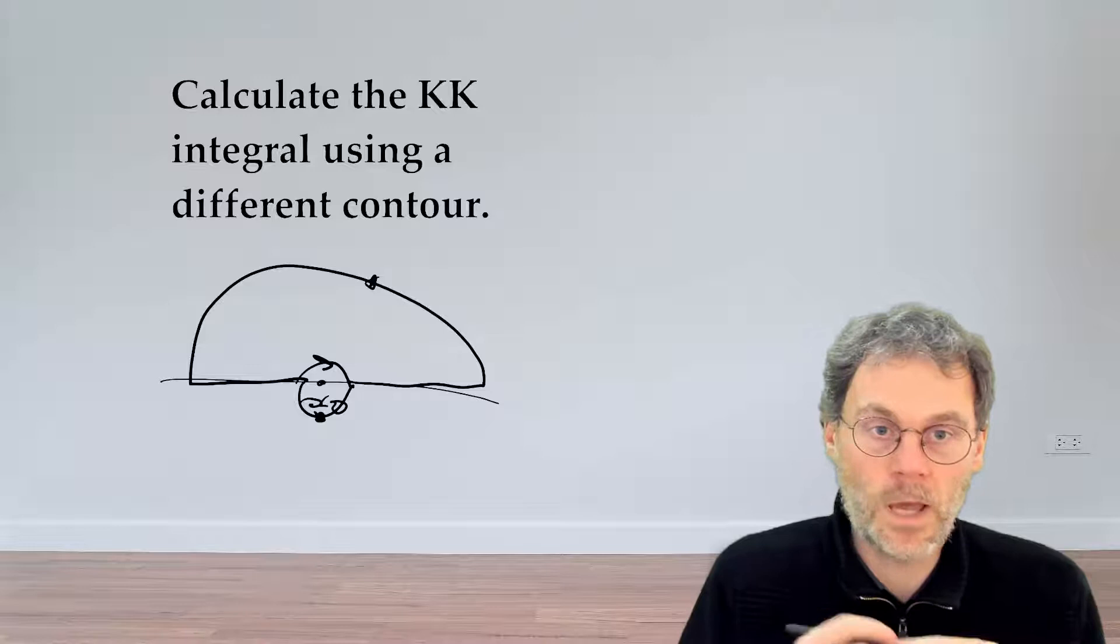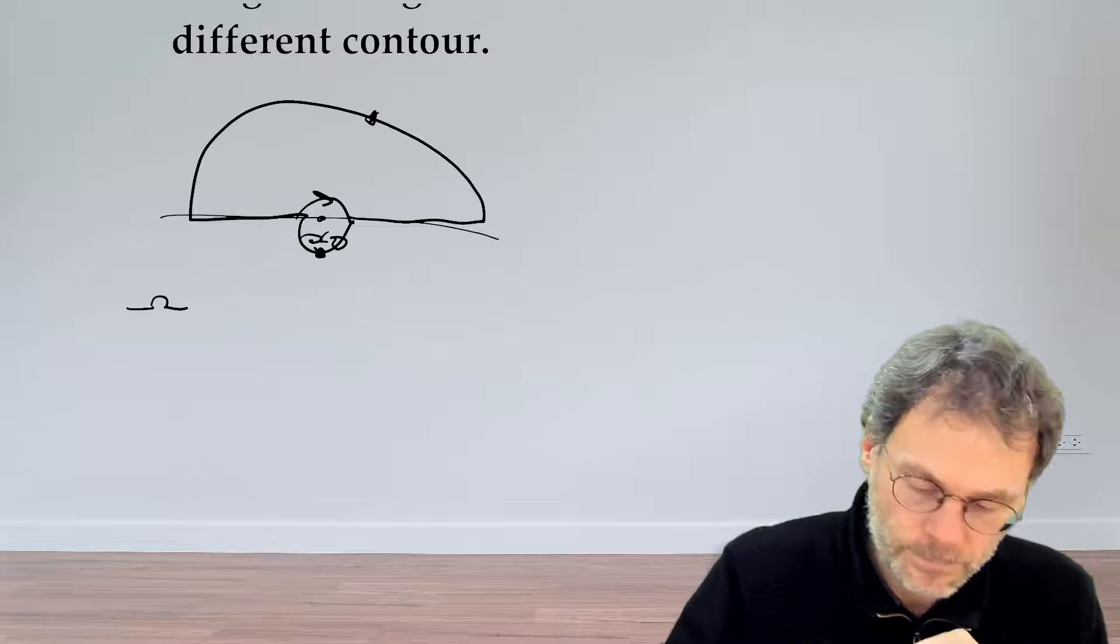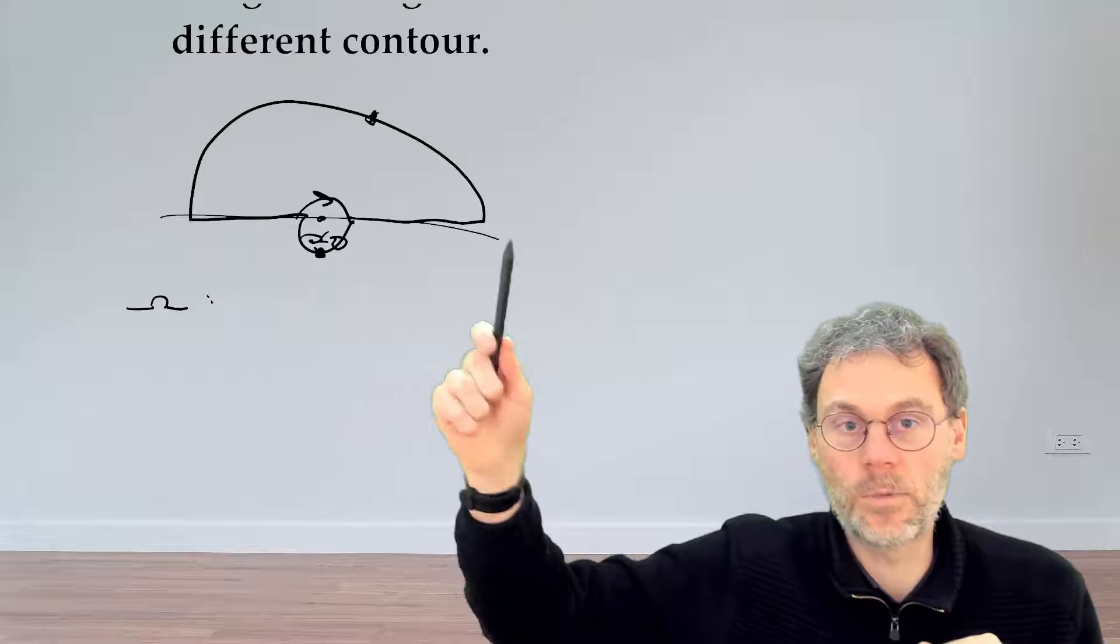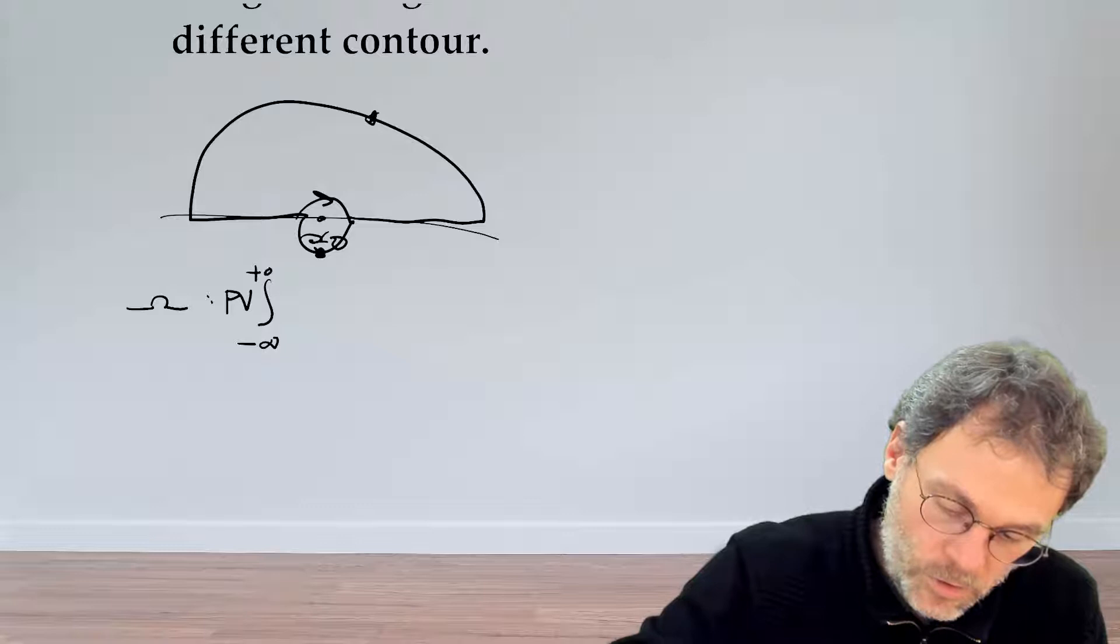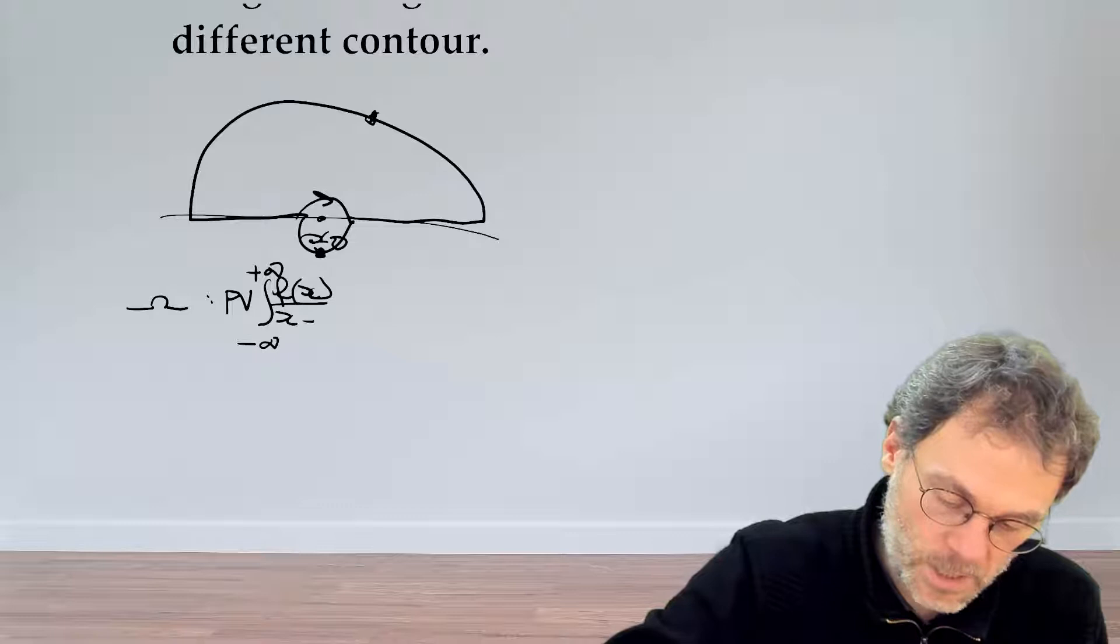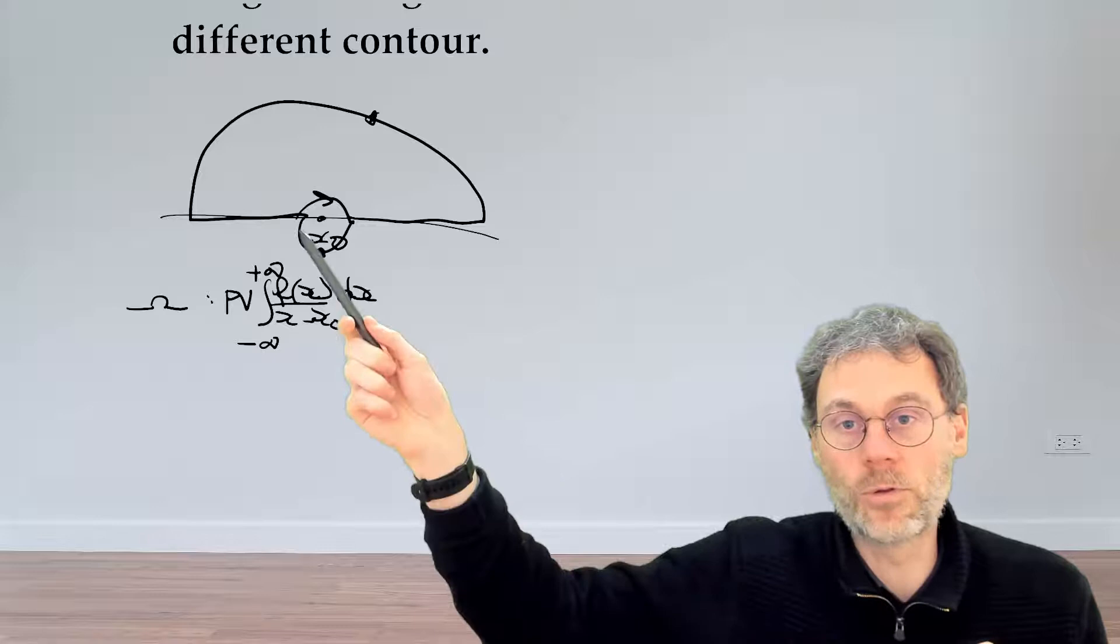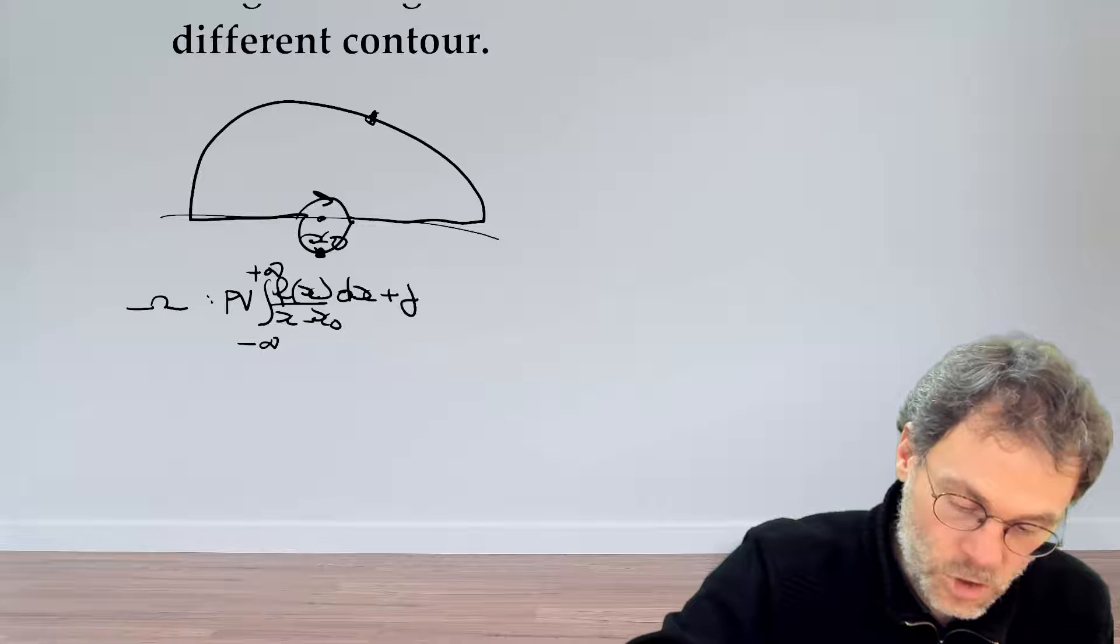A quick recap from the textbook: when closing our contour like this, this part and that part together became the principal value integral from minus infinity to plus infinity f of x, x minus x0, dx. Then we had the contribution from this little guy here using the small limit theorem, giving us j minus pi f of x0 equals 0.